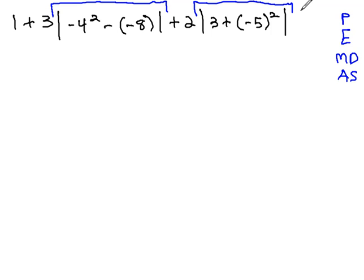So, let's see if we can simplify inside these absolute values first, and then at the end of that, we will make everything positive, or the distance from 0.